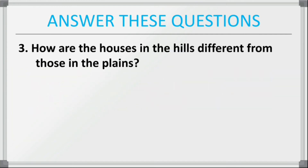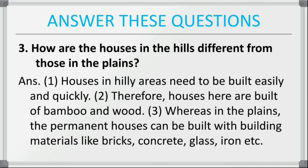Third question: how are the houses in the hills different from those in the plains? Houses in hilly areas need to be built easily and quickly, therefore houses here are built of bamboo and wood. Whereas in the plains, permanent houses can be built with building materials like bricks, concrete, glass, iron, etc. People on hills use lighter materials like bamboo and wood, while people on the plains can build permanent houses made of concrete, bricks, glass, iron, etc.